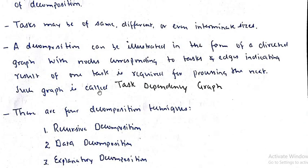A decomposition can be illustrated in the form of a directed graph with nodes corresponding to tasks, and edges indicating that the result of one task is required for processing the next. This is the task dependency graph.